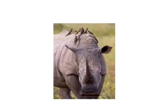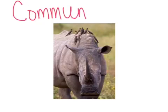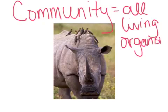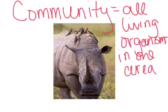If we look at the rhinoceros and then maybe the oxpeckers — the birds that live on the rhinoceros and have a mutualistic relationship — now we're studying a community. A community equals all of the living organisms in one area. We could also look at the grasses that the rhinoceros eat. When we look at a food web, we're studying a community.